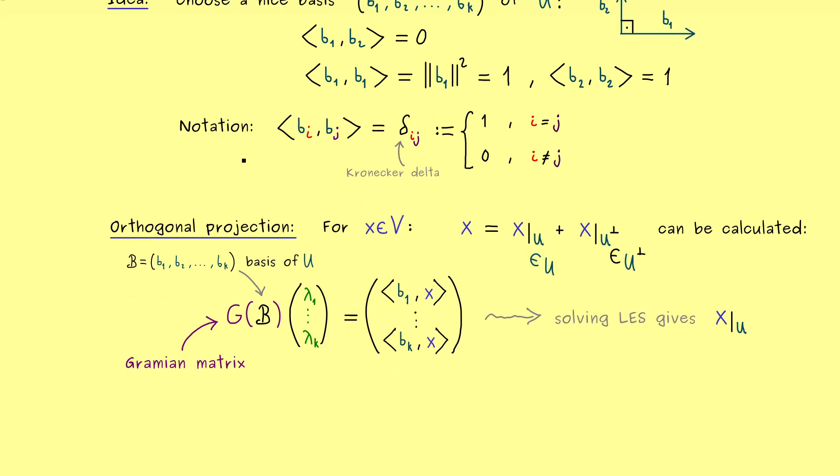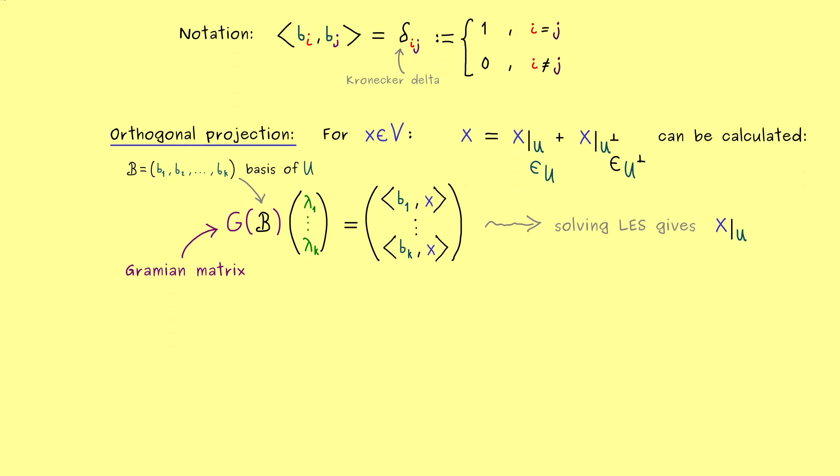And there you see, now the nice basis from the beginning comes in. So we just have to recall how the Gramian matrix was defined. And in fact, the only things that go into the Gramian matrix are the basis vectors of U. And since everything inside is given by inner products, a condition like the one with the Kronecker delta before really helps. Because it immediately implies that the Gramian matrix is just the identity matrix. Indeed, you should see, we have zeros everywhere except on the diagonal. And there we find ones.